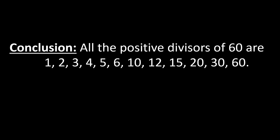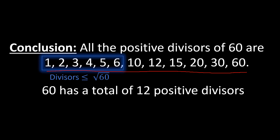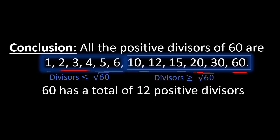All positive divisors of 60 are: 1, 2, 3, 4, 5, 6, 10, 12, 15, 20, 30, and 60. Negative divisors like -1, -2, -3 are also divisors, but once we have the positive ones, we just negate them to get the rest. So 60 has a total of 12 positive divisors and 24 divisors overall counting negatives.